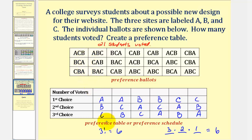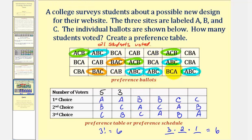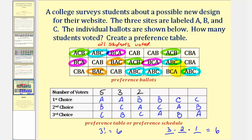Now we'll count the number of votes for each particular order. Let's begin by looking for the order of A, B, C — there's one, two, three, four, and five. Now we'll look for A, C, B — there's one, two, three. So there are three voters for the order A, C, B. Now we'll look for B, A, C — there's one, two; looks like there's only two. And now we'll look for B, C, A — there's one, two, three, and four.